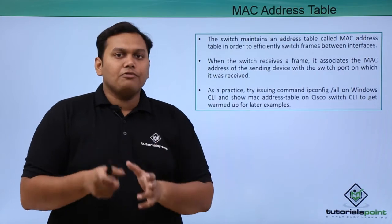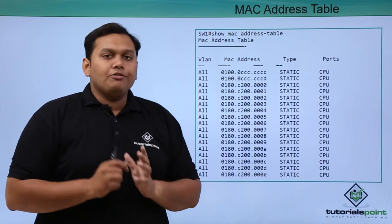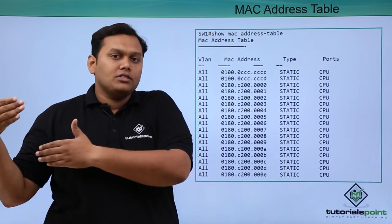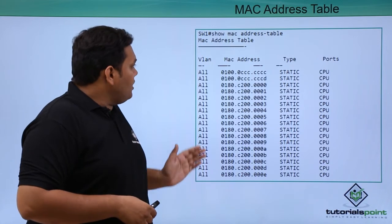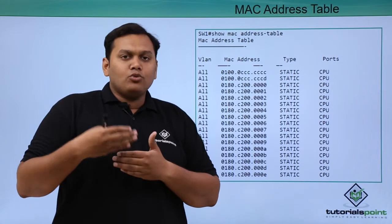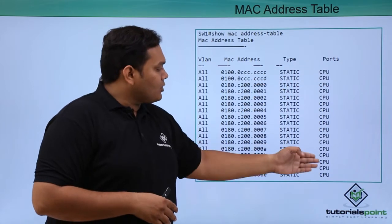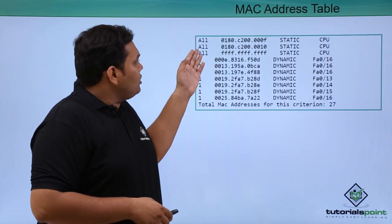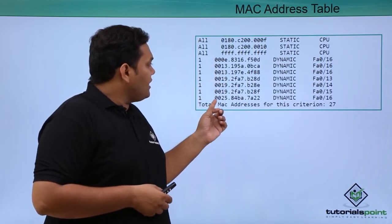For a switch, if you enter the command show mac address-table, it will list out all the MAC addresses associated with their connected ports. You can see all VLANs available, MAC addresses in Cisco format, and the type - there are two types: static and dynamic. Static entries are shown with the CPU port connected to the switch, while after that they are dynamic in nature.